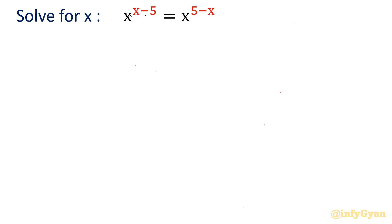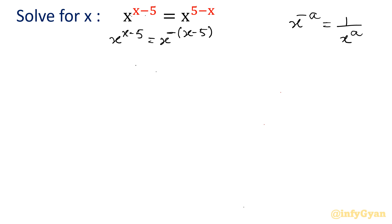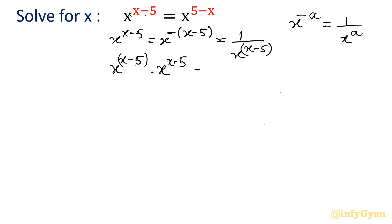Taking negative common, I will write x^(x−5) = x^(−(x−5)). By the exponent property, x^(−a) can be written as 1 over x^a, so I will write this as 1 over x^(x−5). Now multiply both sides by x^(x−5), so x^(x−5) times x^(x−5) equals 1.